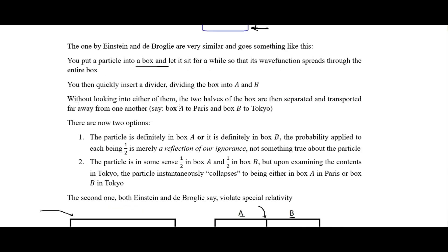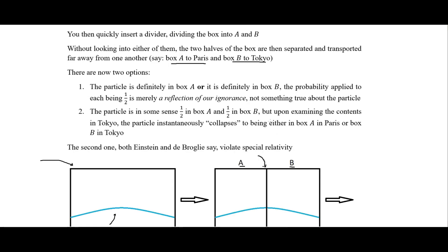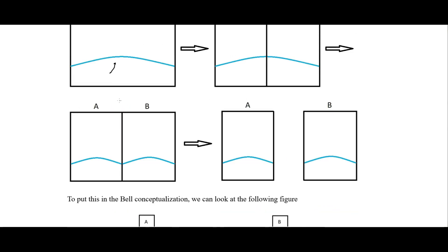Without looking into either half, the two halves of the box are then separated and transported far away from one another. In de Broglie's version, you send one to Paris and one to Tokyo. The wave function splits so that there's roughly a 50% chance in one half and a 50% chance in the other. We then separate the boxes — say this one goes to Paris and this one to Tokyo.